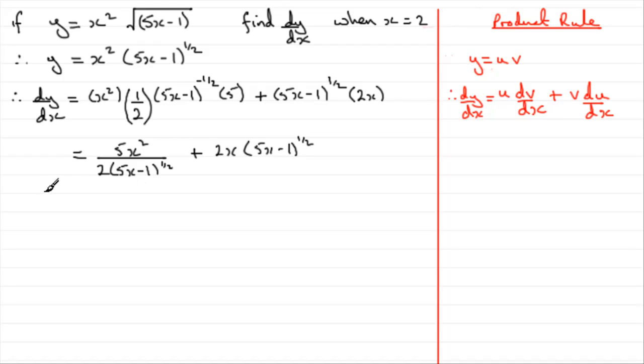Now, all we need to do is find out the value of dy by dx when x is 2. So when x is 2, we'd therefore have the value of dy by dx is going to equal 5 times 2 squared. 2 squared is 4, 5 times 4 is 20. And that's going to be divided by, well, if we put x is 2 in here, we get 5 times 2 is 10, take away 1 is 9. And 9 to the power of half, or the square root of 9 is 3. So we have 2 times 3, which is 6. So that's 20 over 6.